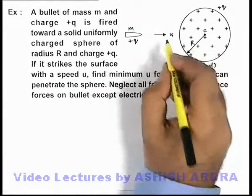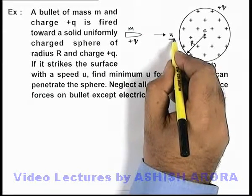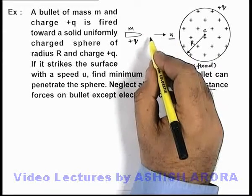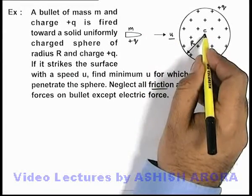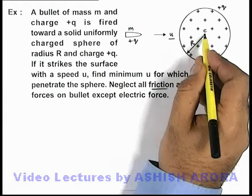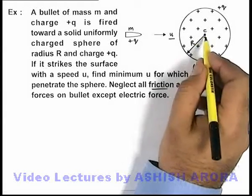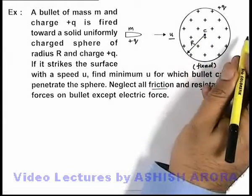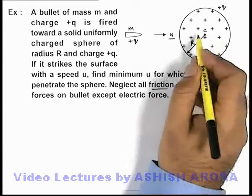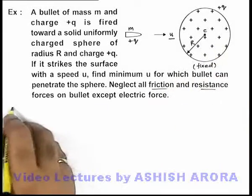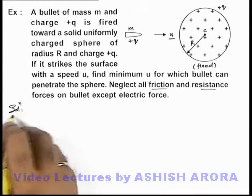That means the minimum speed should be such that the bullet will be able to reach the center, because after reaching the center, due to repulsion of electric forces only, it will be able to complete the penetration. So in this situation we can write: